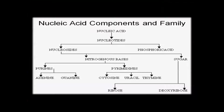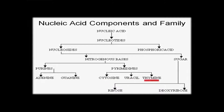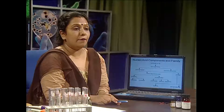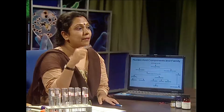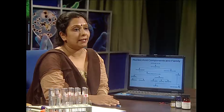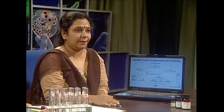Purine bases may be adenine or guanine, and pyrimidine bases may be cytosine, uracil, and thymine. In case of DNA, we find the presence of thymine, but that particular base is replaced by uracil in case of RNA.